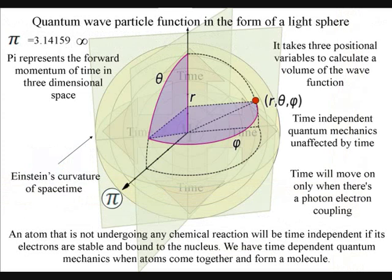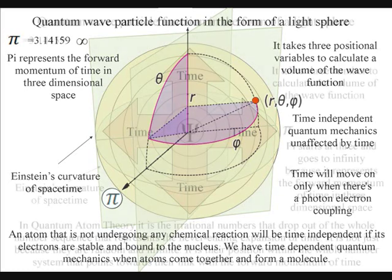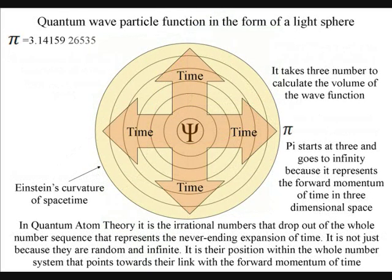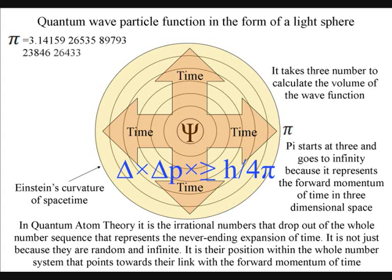We have Einstein's curvature of space-time because of the spherical shape of the quantum wave-particle function. This is why we have pi in the equation representing the shape of the wave-function in three-dimensional space-time.